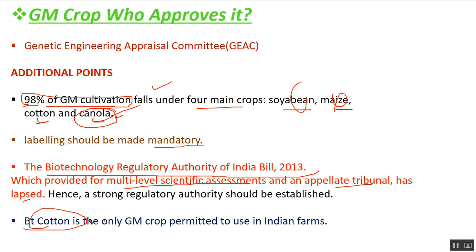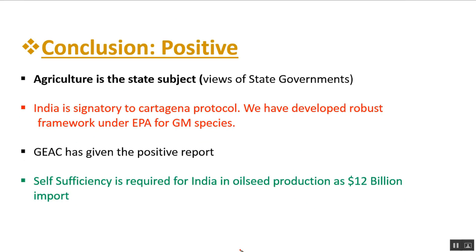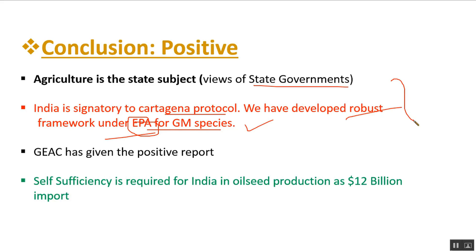BT cotton is currently the only GM crop permitted to be used in Indian farms. For a positive conclusion: agriculture is a state subject, so the central government needs to consult state governments. India is a signatory to the Cartagena Protocol and has developed a robust framework under the Environmental Protection Act for GM species. The GEAC has already given a positive report in the case of GM mustard, as it did for BT cotton, and India needs to be self-sufficient in oilseed production.